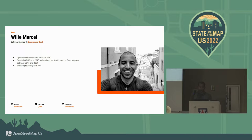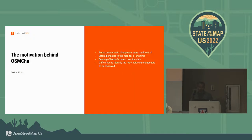I maintained it from 2017 until 2021 with the support of Mapbox. When I created OSMCHA, some of the motivations were that it was quite hard to find the problematic changesets. Sometimes they were present for a long time on the map. We felt that there was a lack of control over the data. At that time, I was part of the Brazilian community, with a group of people interested in data quality and trying to review edits on OpenStreetMap.